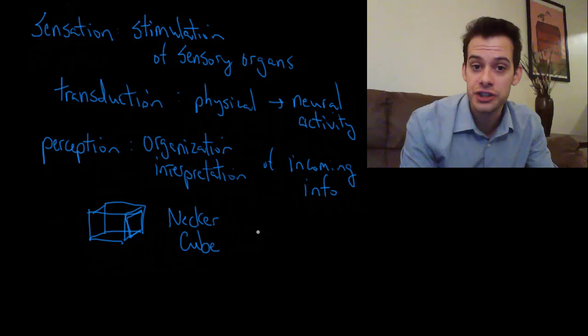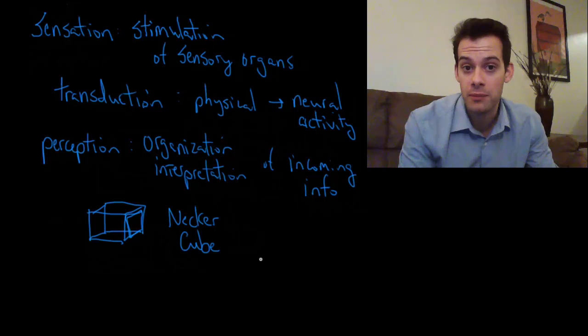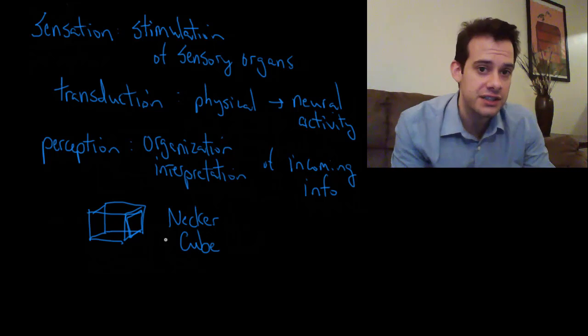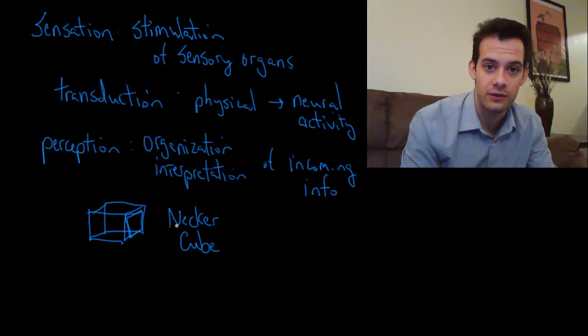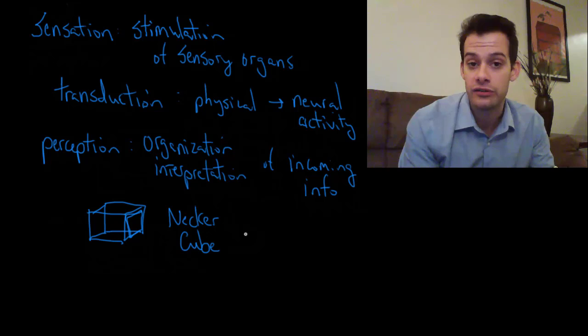This is not just true of illusions; it's also true of other biases and errors that we're going to see when we problem-solve and when we make decisions. So understanding this is not just for understanding sensation and perception—it's really for all sorts of errors that we make.